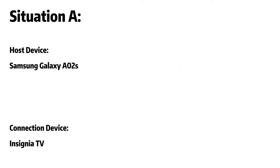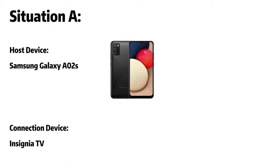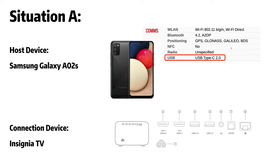For example, using a Samsung Galaxy A02s as the host device and connecting to an Insignia TV. The Samsung Galaxy A02s has a USB-C port, but it only supports USB 2.0 protocol, which cannot transfer video and audio signals. That means no matter which USB-C to HDMI adapter or cable you use, you cannot stream content to the TV from the Samsung Galaxy A02s.